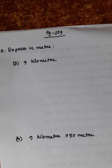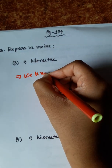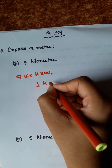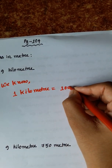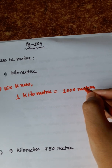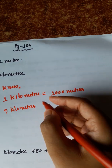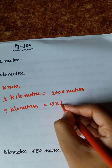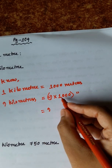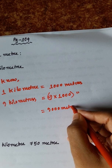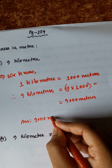Next, number 3: 9 kilometers express in meters. 9 kilometers is equal to 9 into 1000 meters, so 9 followed by three zeros gives us 9,000 meters. Answer: 9,000 meters.